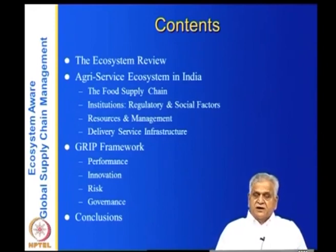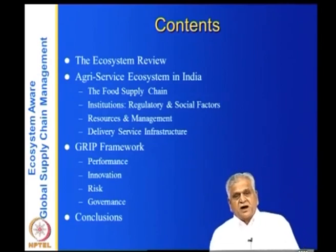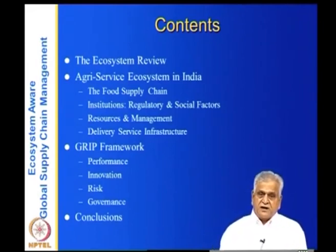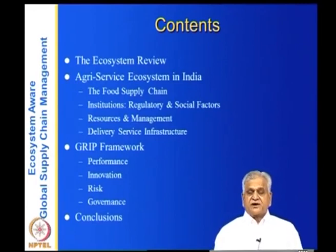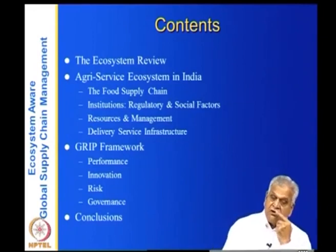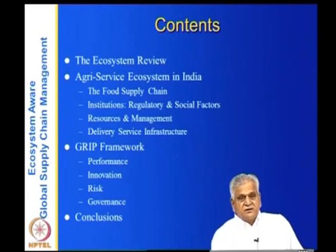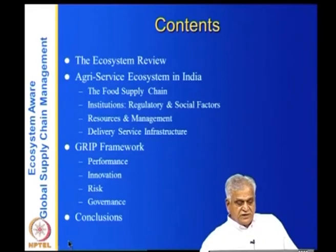We will look at the delivery service infrastructure — from farms to customers — the logistics and IT available today. We will apply the GRIP framework to assess performance of this food supply chain, then discuss innovation. Here we concentrate on new-to-the-market innovations: how India can improve the efficiency of its agriculture supply chain. We will also look at risk factors, governance of small farm agriculture, and governance structures available, and conclude. This may take two or three lectures.